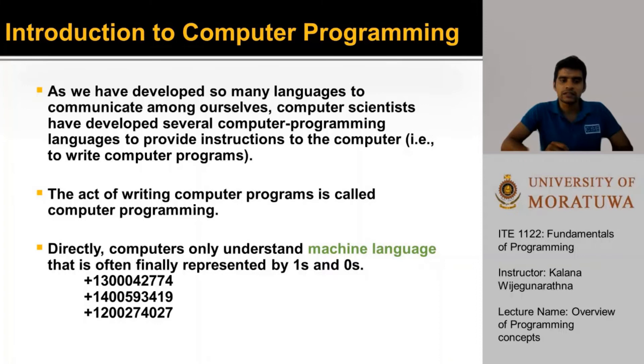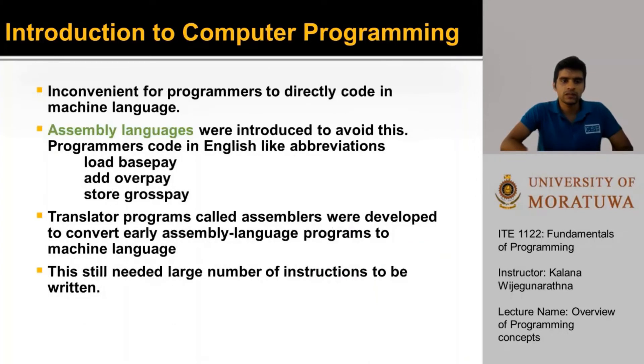Directly, computers only understand machine language that is often represented by ones and zeros. What you see below here are some machine language pieces of code. However, it is very inconvenient for programmers to directly write code in machine language. And this is why assembly languages were introduced earlier on.